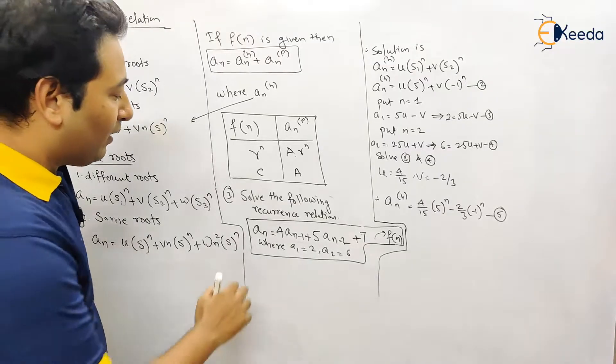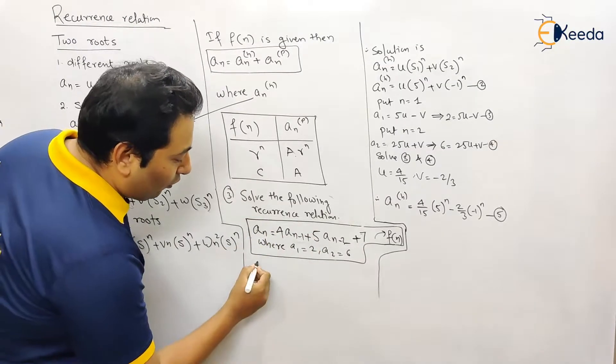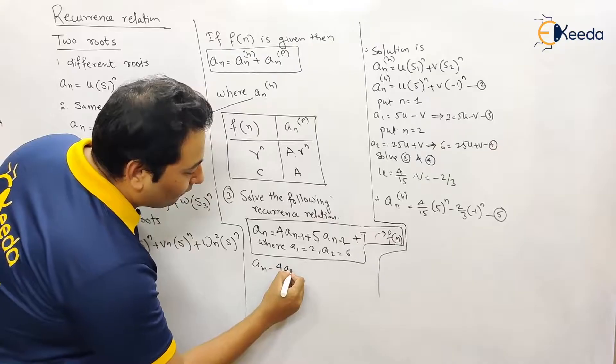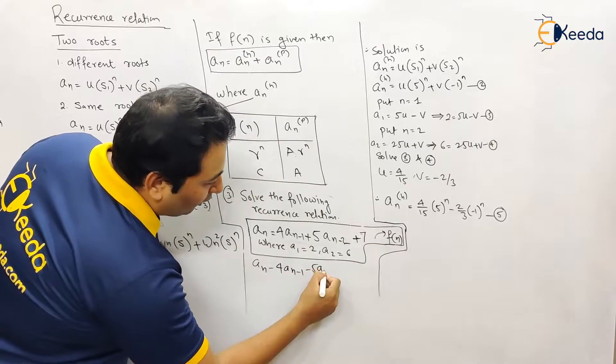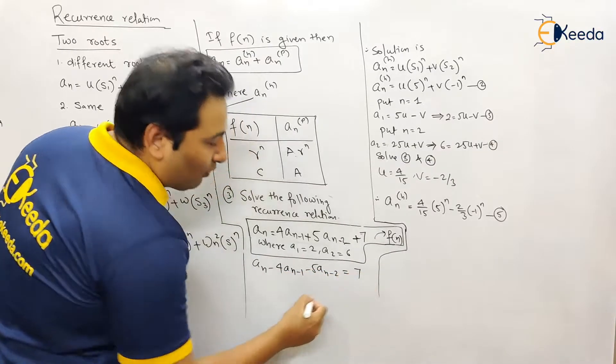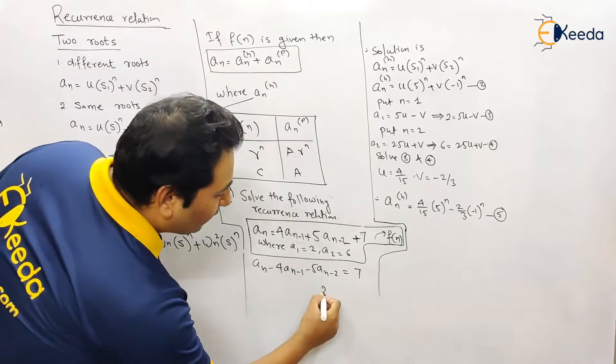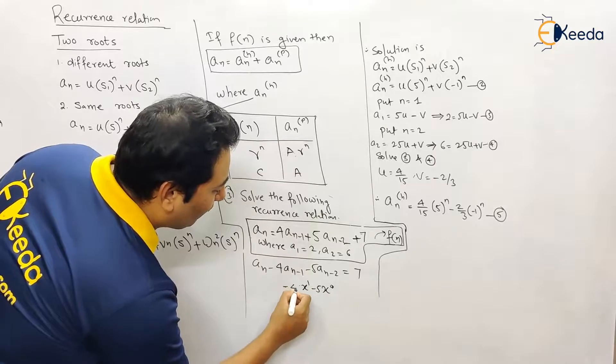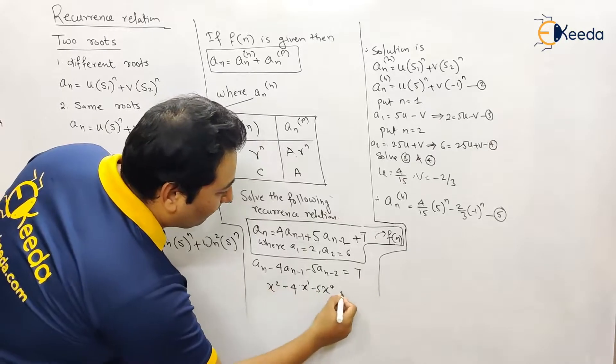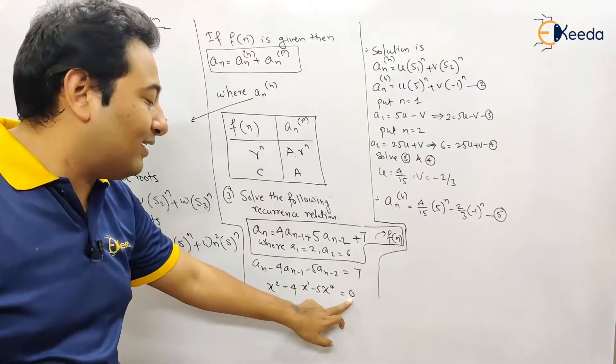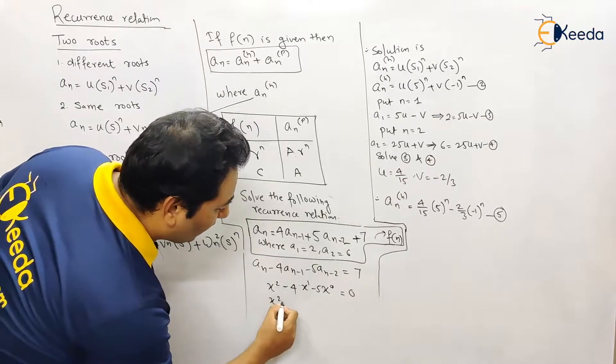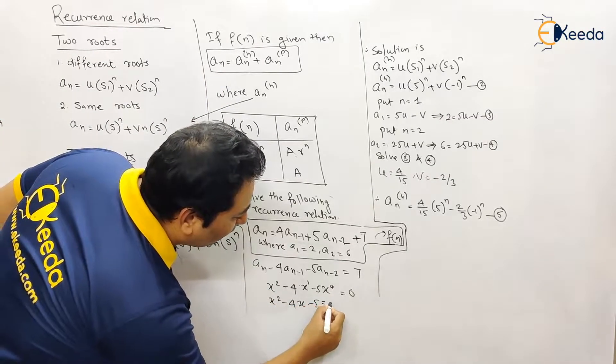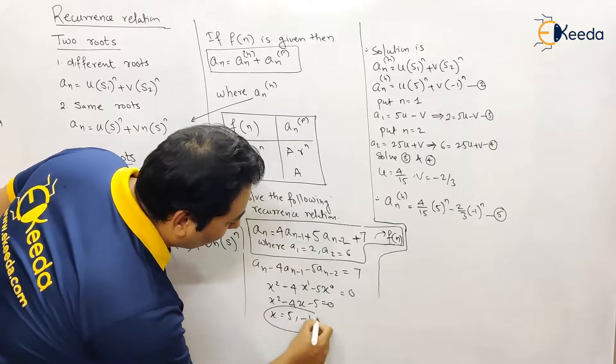So let us start with the solution. First of all, let's take all the terms to left hand side, and right hand side will be equal to 7. The procedure is the same: x raised to 0 minus 5x raised to 1 minus 4x squared, we're going to consider it as 0. So in short, this is x² - 4x - 5 = 0, so x equals 5 and -1.